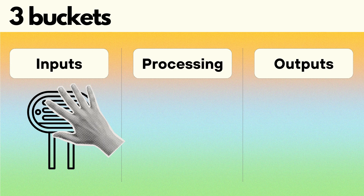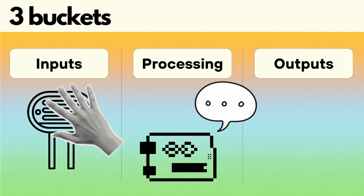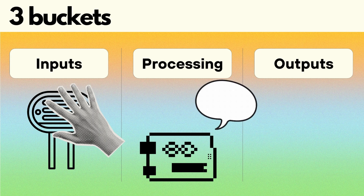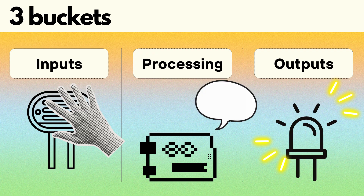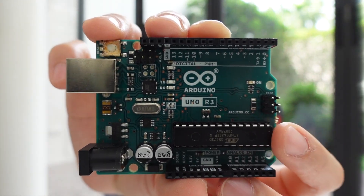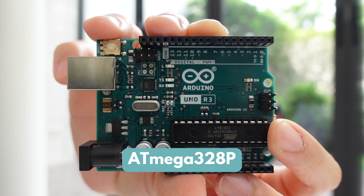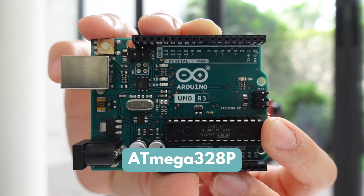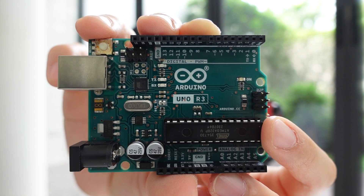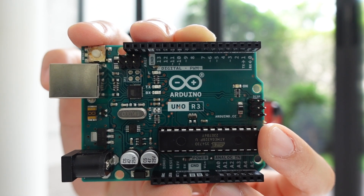Input senses what's happening in the surrounding environment. Processing acts as the brain, taking in the data from the input and deciding what action to take. And then output creates an action or effect in the physical world, like turning on an LED. So now let's look at how an Arduino corresponds to those three buckets. We're going to start with processing — the brain of the board — and on the Arduino Uno it is the chip labeled ATMega328P, which is responsible for executing code and controlling connected components.